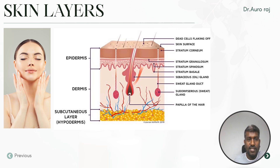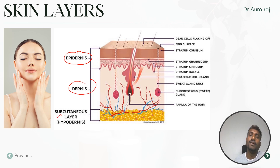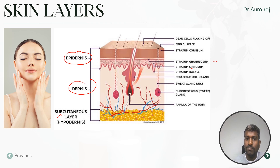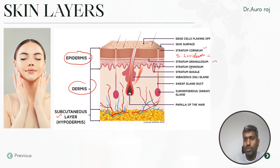Number one: skin layers. Since school days we know there are three layers — epidermis, dermis, and hypodermis. For the FMG exam it is important to remember the stratum layers: stratum basale, stratum spinosum, stratum granulosum, stratum lucidum, and stratum corneum. Remember, stratum lucidum is only seen in the palms and soles.